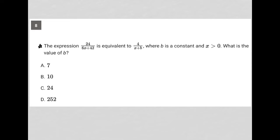This question says the expression 24 over 6x plus 42 is equivalent to 4 over x plus b, where b is a constant and x is greater than 0. What is the value of b?